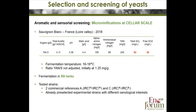To validate the screening assays, another micro-vinification on Sauvignon blanc was carried out at experimental cellar scale. Fermentations were done at 16°C and 18°C by inoculating six 50-liter tanks of Sauvignon blanc must, with two commercial references — one with IRC7 short form and another with IRC7 long form — and with already preselected experimental strains of different oenological interest.